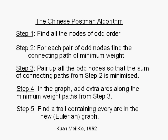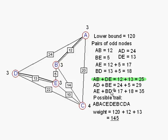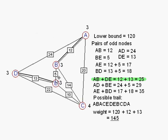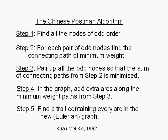Pair up all the odd nodes so that the sum of connecting paths from step two is minimized. That's what we did here. We found the three possible pairings and we found the minimum one, which was AB and DE. On the graph, we added extra arcs along the minimum weight paths from step three. Those were these extra lines connecting A and B and D and E. Now we found a trail containing every arc in the new graph, which is now Eulerian because all its nodes have an even order.